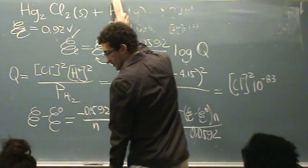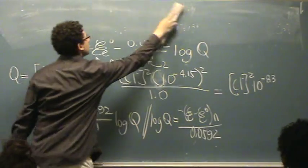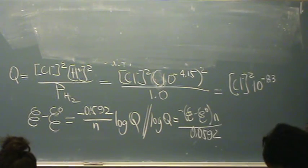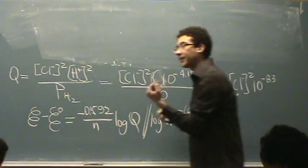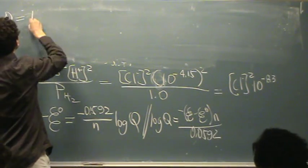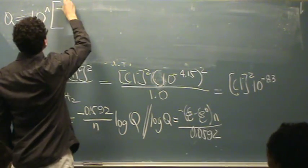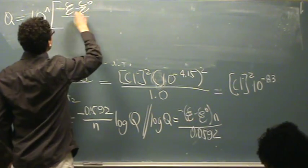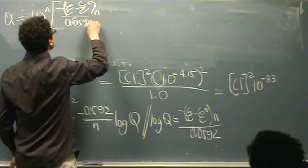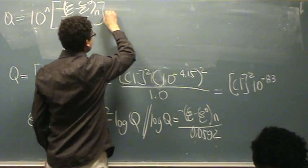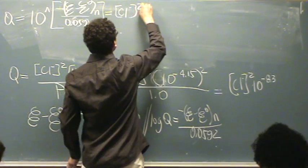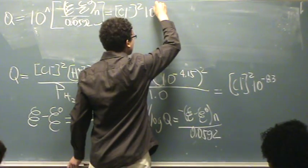So the log of Q is going to equal E minus E standard times n over 0.0592, and that's a negative. So I'm just rearranging things a bit. I'm going to have to erase the top, I can't fit it in the space. Now I'm going to get rid of the log, so I have to raise that to the 10. Q equals 10 raised to negative E minus E standard times n divided by 0.0592. And that equals Cl- squared times 10 to the -8.3.